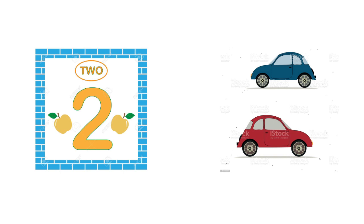Now, how do we write number two? We start from the top, we go round to the right, and then we slide down, then we write a straight line to the right. Let's try to write it again — we start from the top, we go round to the right, then we slide down, then a straight line to the right. And this is the way we write number two.